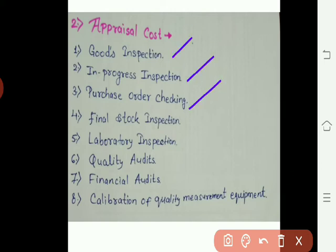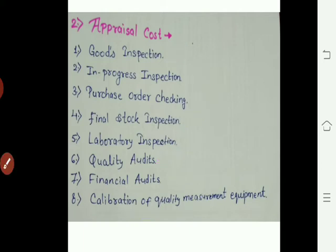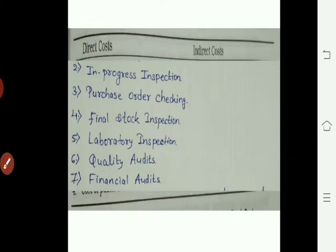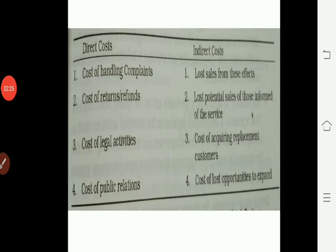Next is appraisal cost. Appraisal includes: goods inspection, in-process inspection, purchase order checking, final stock inspection — basically post-manufacturing activities — financial audits, calibration, and quality measurement.